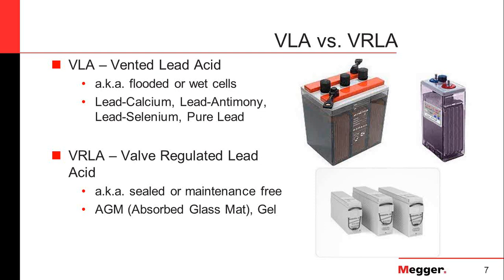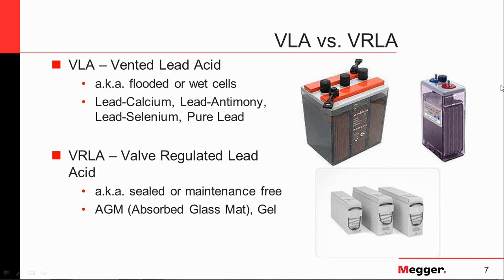The VLA is a vented lead acid battery. The VRLA is a valve-regulated lead acid battery. Vented lead acids are also called flooded cells or wet cells. You can always tell the difference because they will have a tank or jar where you can actually see through it. The valve-regulated are also called sealed or maintenance-free, though they are not truly sealed and not truly maintenance-free. They're containers you won't be able to see through to see the plates. Both are going to be some sort of lead alloy base or pure lead. Flooded cells have liquid electrolyte, while valve-regulated use absorbed glass mat or a gel cell.